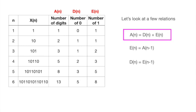First of all, a(n) equals d(n) plus e(n), and this is self-explanatory, as the total number of digits equal number of digits 0 and 1 added together.